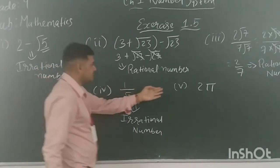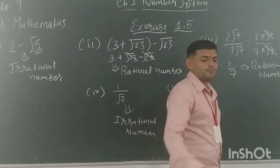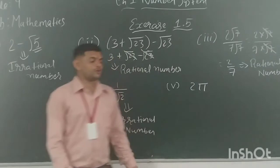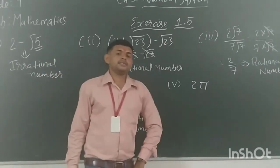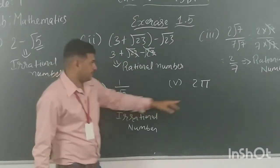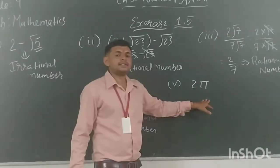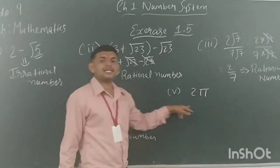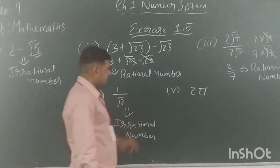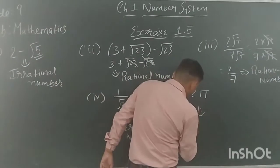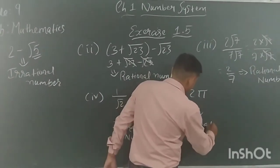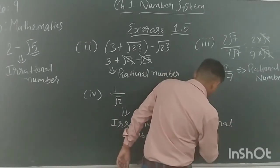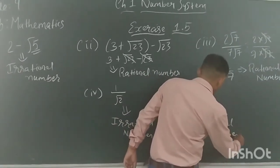The last number is 2π. As I have already told you earlier, π is an irrational number. Since 2 is connected with an irrational number, the result is again an irrational number.